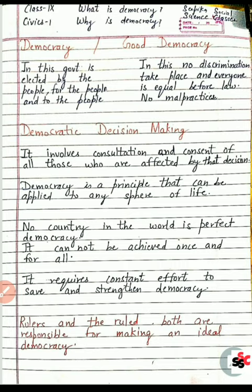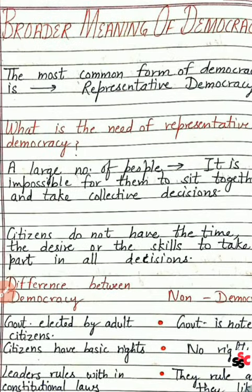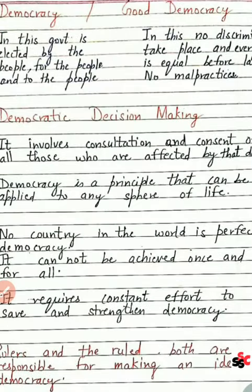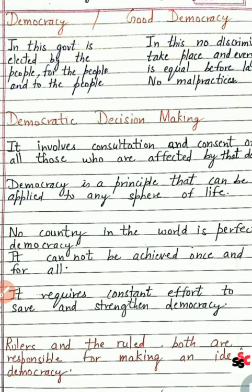Rulers and the ruled — both are responsible for making an ideal democracy। दोनों की ज़रूरत है एक good democratic country बनाने में। I hope students, आपको representative democracy क्या है और उसकी क्या need है — वो clear हो गया। Democracy और non-democracy में क्या difference है, democracy और good democracy में क्या difference है, और democracy हर sphere में applicable होनी चाहिए — यह सब हमने discuss किया। इसके साथ हमारा यह chapter finish होता है — go through all the videos to understand the chapter properly। Thank you।